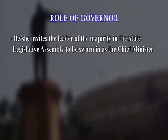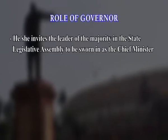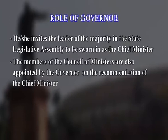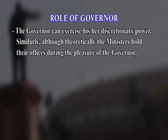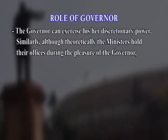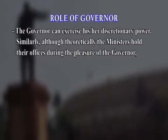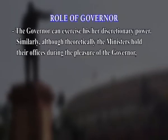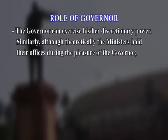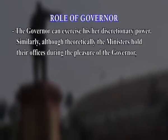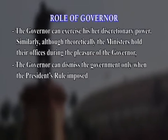He or she invites the leader of the majority in the state legislative assembly to be sworn in as the chief minister. The members of the council of ministers are also appointed by the governor on the recommendation of the chief minister. The majority can consist of members of the legislative assembly belonging to only one party, or a group of parties and independents. However, when there is no clear majority in the house, the governor can exercise his or her discretionary power. Although theoretically the ministers hold their offices during the pleasure of the governor, in practice the chief minister and council of ministers remain in office as long as they enjoy the support of the majority in the legislative assembly. The governor can dismiss them only when president's rule is imposed.